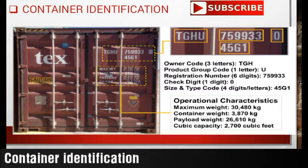After the product group code U, there comes a six-digit number. Here on screen we can see seven five nine nine double three — that is 759933. This is nothing but the registration number of the container. From this registration number, any container is identified, and it helps any shipping or container line to track and trace any container.